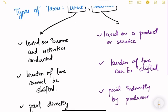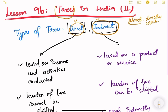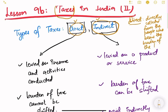Let us see the difference between direct tax and indirect tax. Why do we call them direct or indirect? Direct taxes are called direct because they are directly collected from the people who bear the burden of the tax.